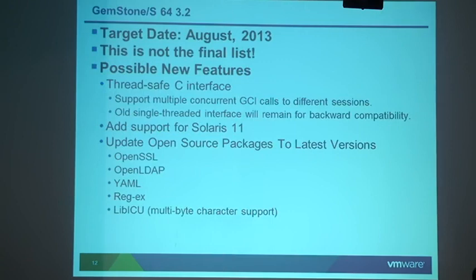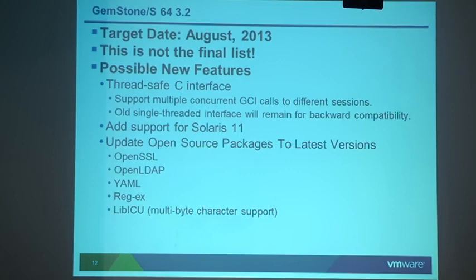Moving on to 3.2 — we're shipping it a little later next year than we did this year. Shipping at the end of the half-year around end of June was causing some heartache within VMware because of end-of-quarter timing, so we're pushing it out to August, which is a quieter time. Also, this is not a final list — we're still meeting with customers and internally to decide what goes into 3.2. The thread-safe C interface is almost certainly going to be in the release.